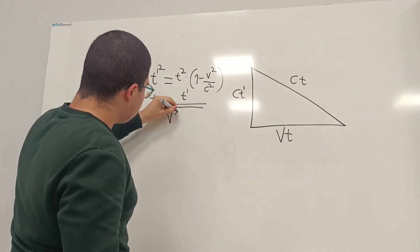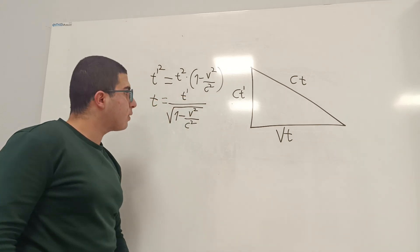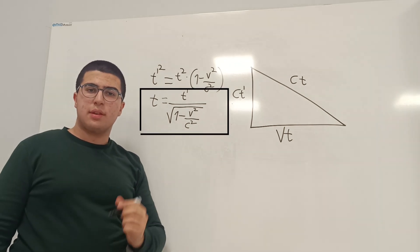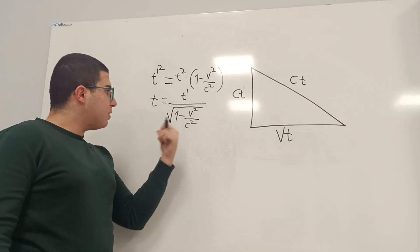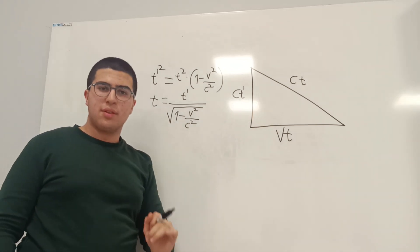So, it is 1 minus v squared divided by c squared. And this is the equation that you saw in the beginning of the video. This is the equation that explains the time dilation, and it just uses the Pythagorean theorem.